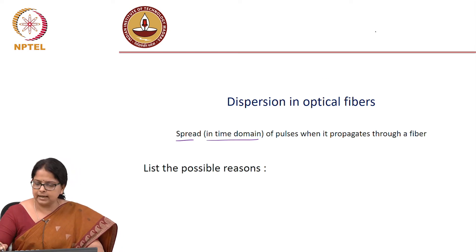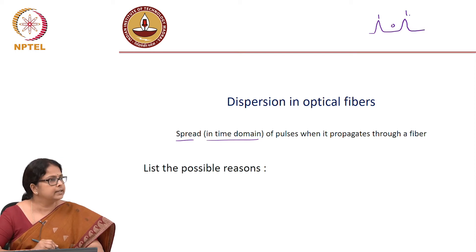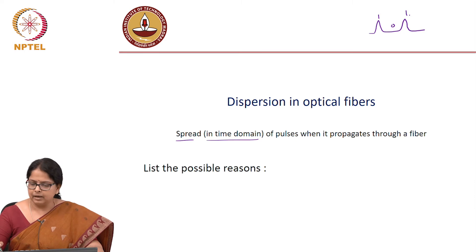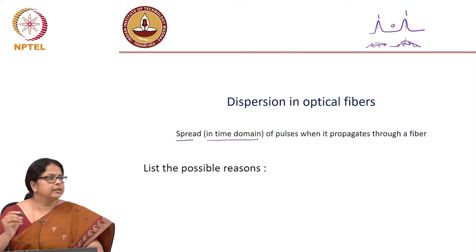Let us say I start with a signal: my 1 is here, 0 is here, 1 is here. This is my input to the fiber. The output of the fiber comes like this - this pulse spreads, this one also spreads. This spread is what is called as dispersion.